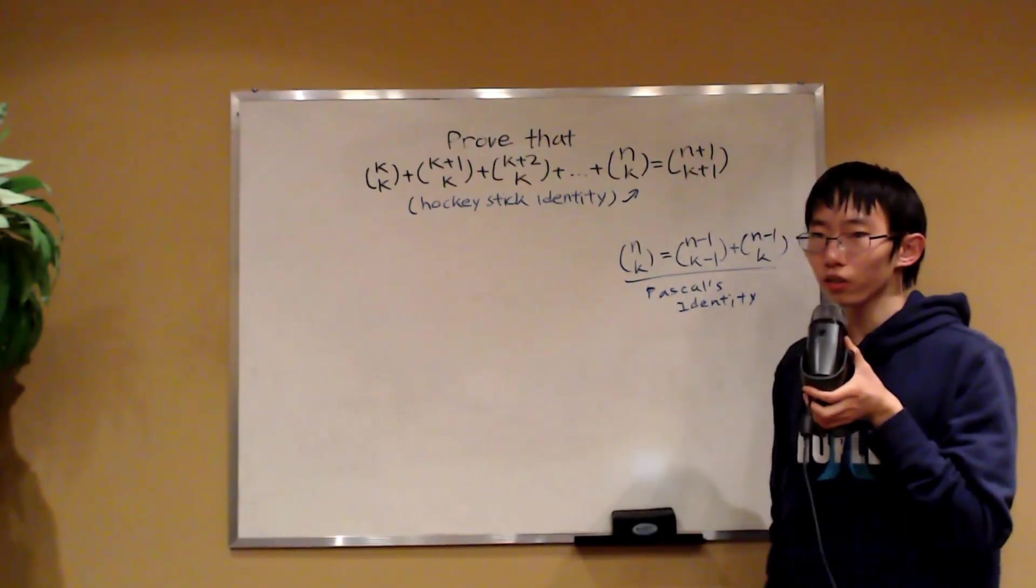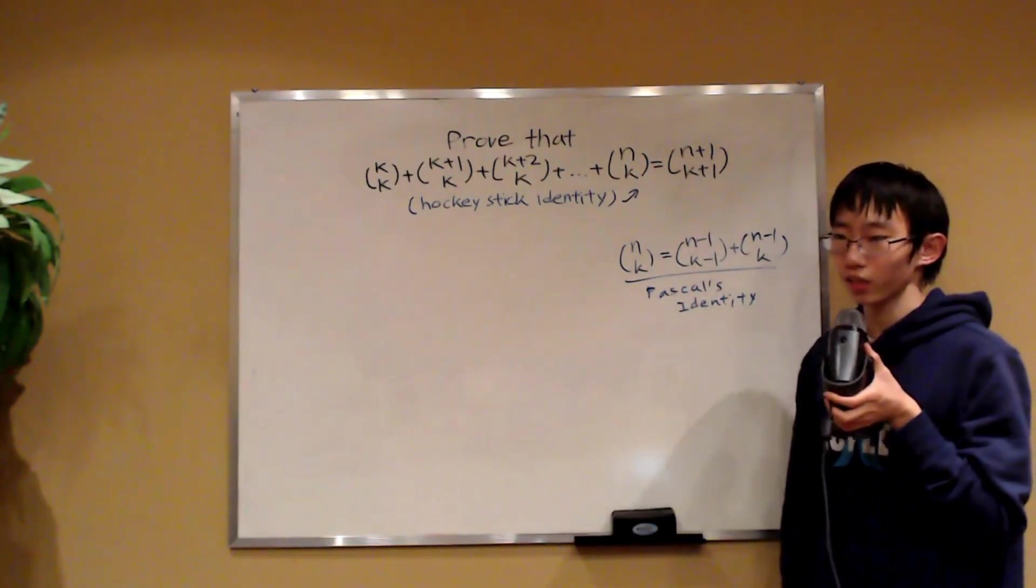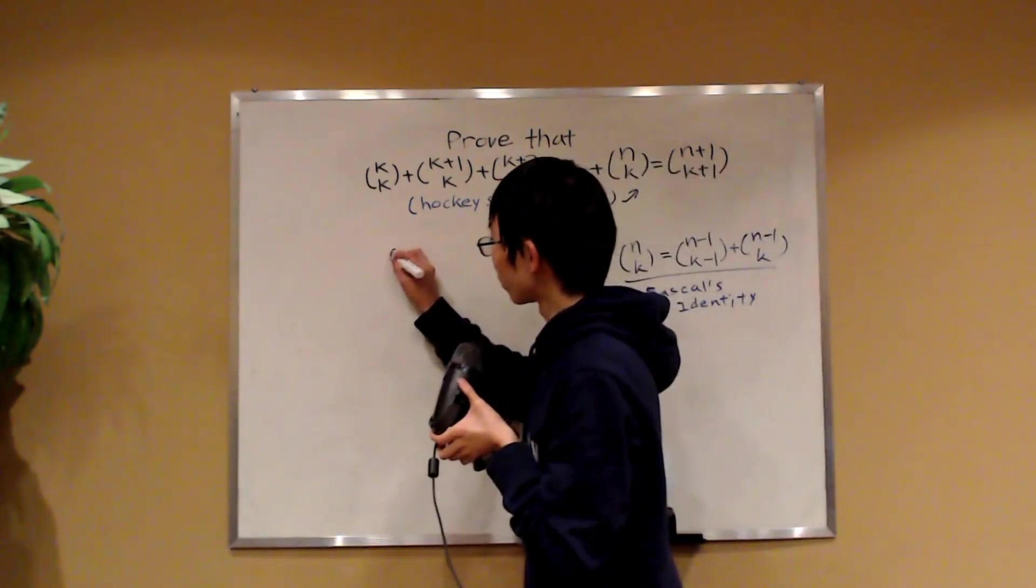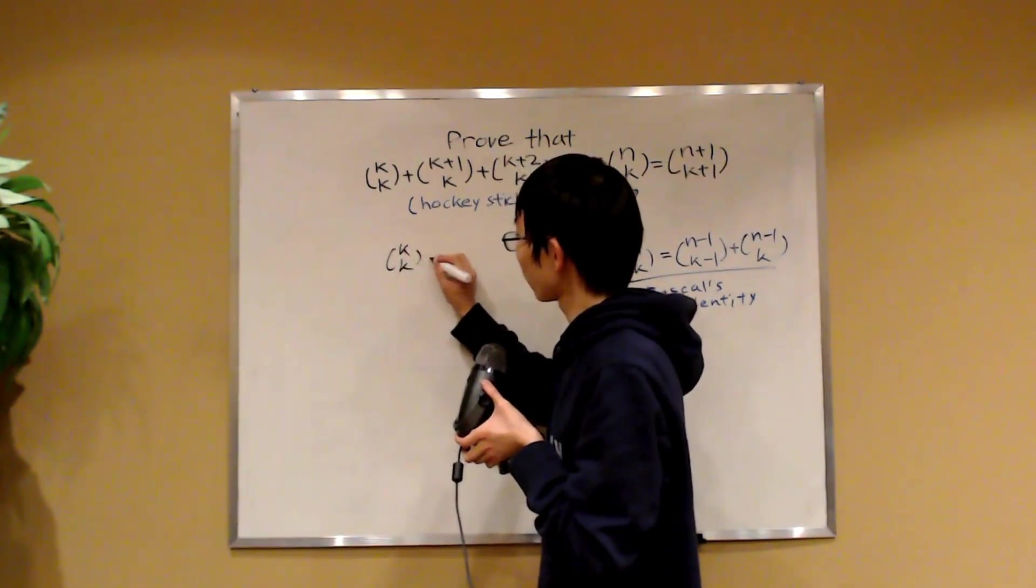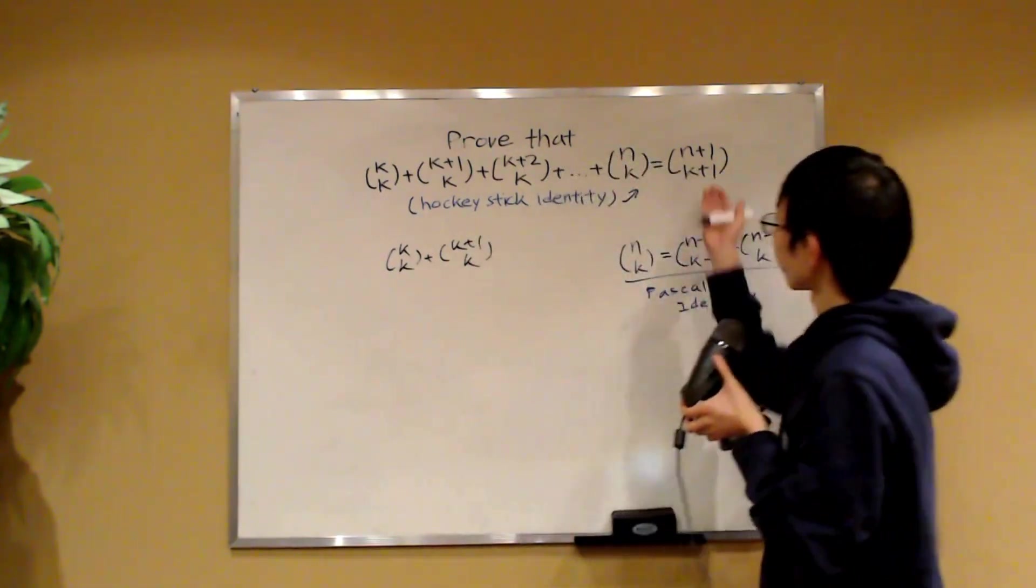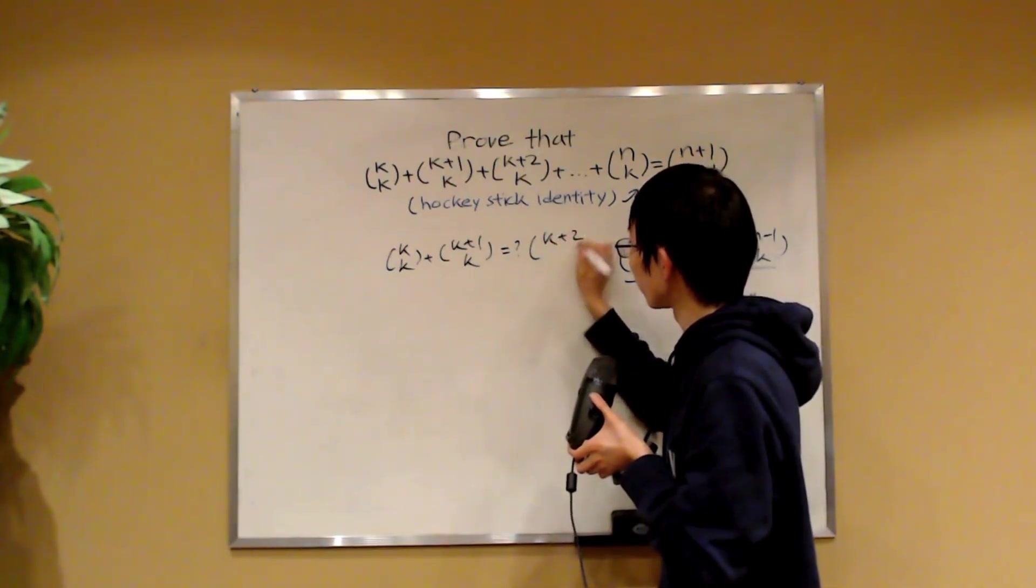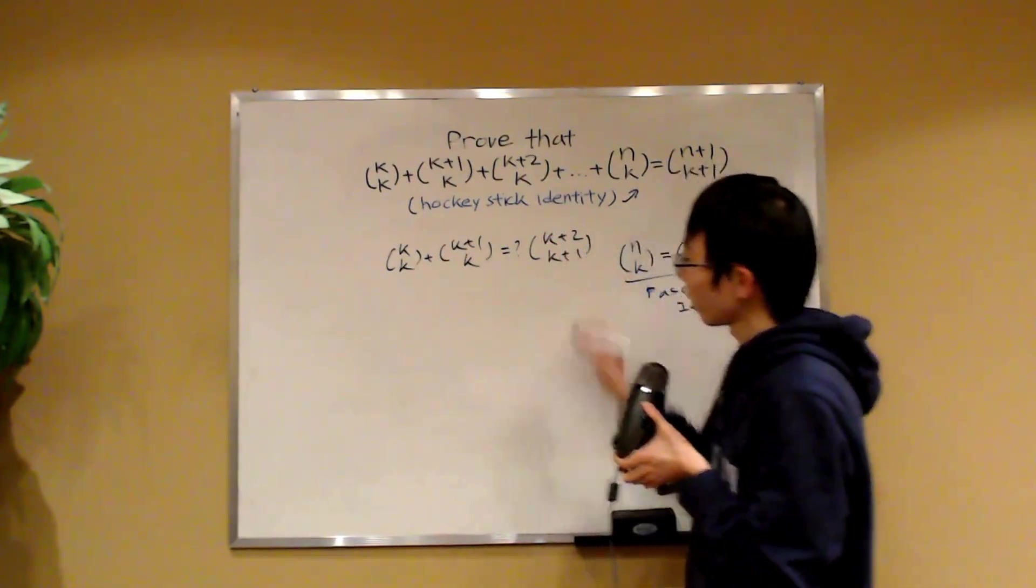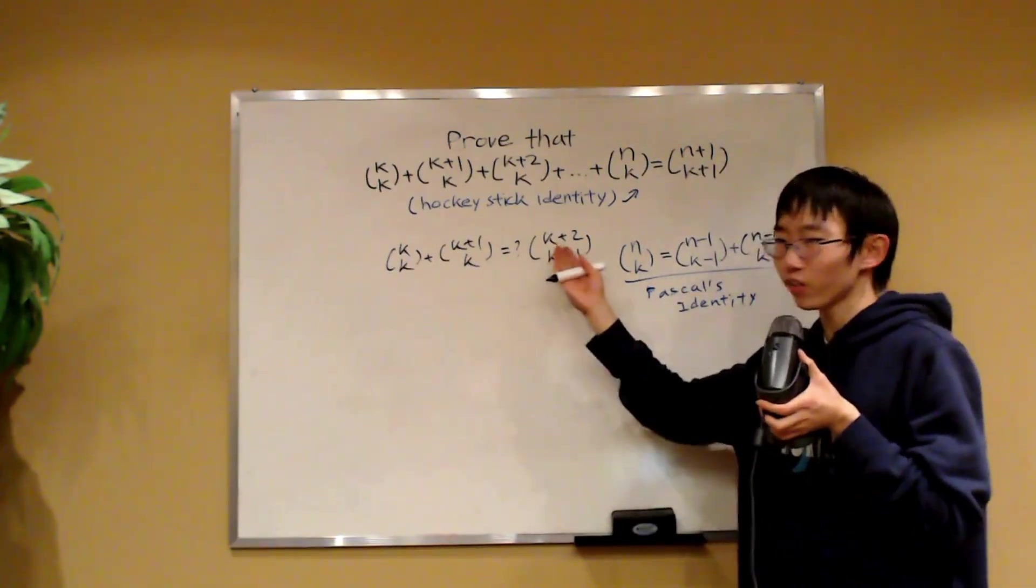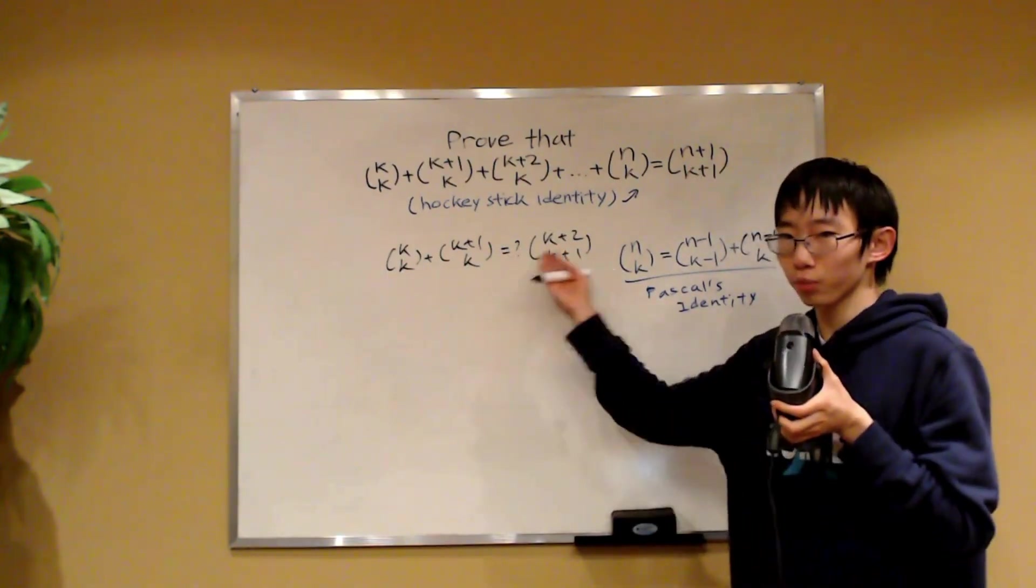And this is an identity that I have derived for the purpose of also proving this hockey stick identity. Now, in order to prove this identity, we're going to proceed by induction. So we're going to start with a simple base case. That base case I'll prove is k choose k plus k plus 1 choose k, and by the formula this should equal to k plus 2 choose k plus 1. I put an equal with a question mark here because we don't know if this is true yet. We have to prove it.